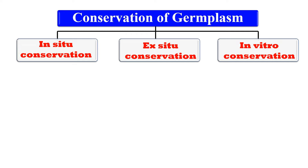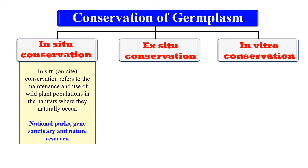First of all, what is in-situ conservation? In-situ means on-site. When the plant or its germplasm is conserved within its natural habitat — means we do not remove the plant from its natural habitat, we just conserve the plant where it is present or where it generally occurs. Examples of this kind of conservation include national parks, gene sanctuaries, and natural reserves, where we just provide protection to the plants in their native habitats.